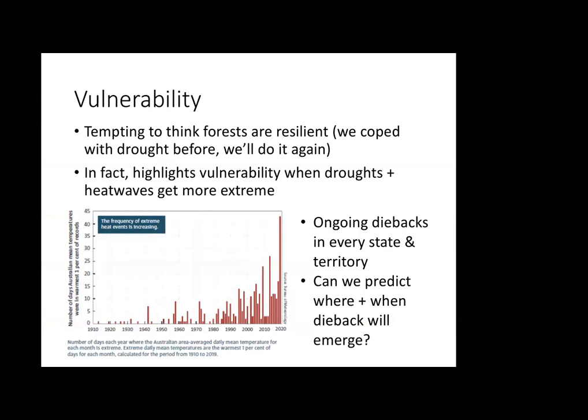It's tempting to think that because drought mortality has happened in the past, Australian systems must be resilient and will remain so. You do see that idea in Australian popular culture — 'we've coped with drought before, she'll be right.' But to my way of thinking, this actually highlights the vulnerability: we already have ecosystems under stress, and when droughts and heat waves get more extreme, that stress will become more extreme. We have a real question of whether they'll be able to keep bouncing back.